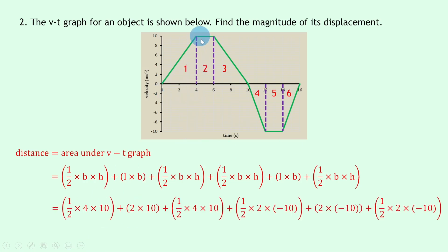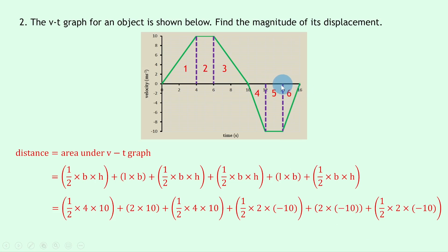For shape one: half times four times ten. For rectangle two: two times ten (from four to six seconds). For triangle three: half times four times ten (from six to ten seconds). For shape four: half times two times negative ten (from ten to twelve seconds). For rectangle five: two times negative ten (from twelve to fourteen). For triangle six: half times two times negative ten. Adding all of these up gives an answer of 20 meters.